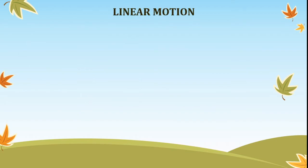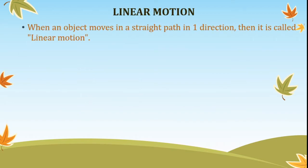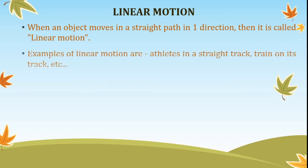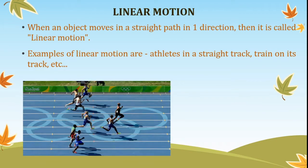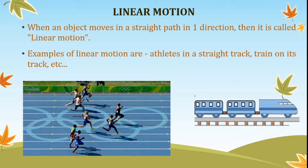Linear motion. When an object moves in a straight path in one direction, then the object is undergoing linear motion. You must have observed athletes running or a train moving in a straight track — these are some examples of linear motion.